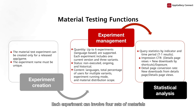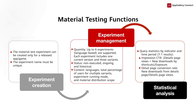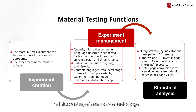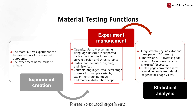Each experiment can involve four sets of materials, including one set already in use and three variant sets. You can check non-executed, ongoing, and historical experiments on the service page. For non-executed experiments, their status is also displayed.